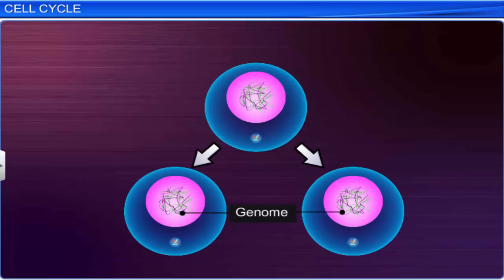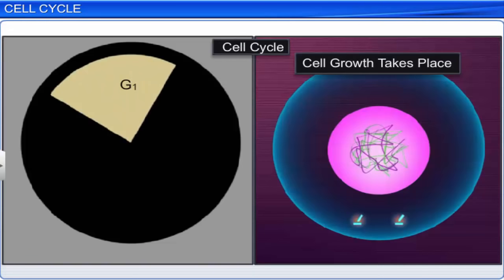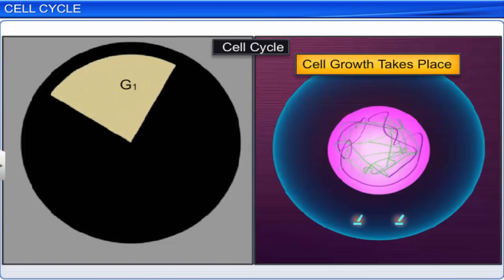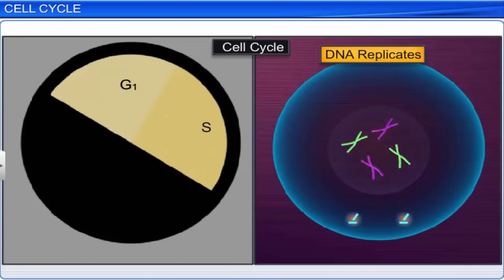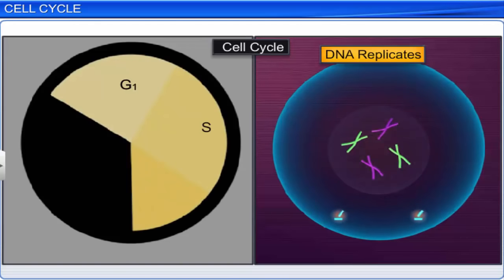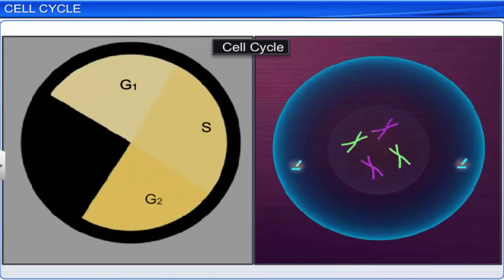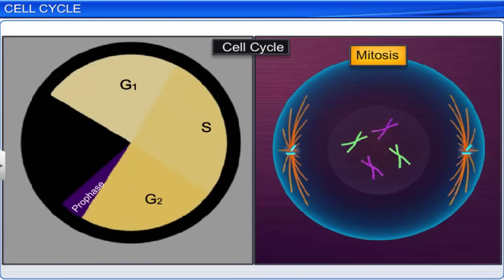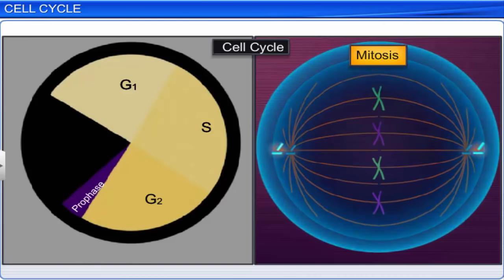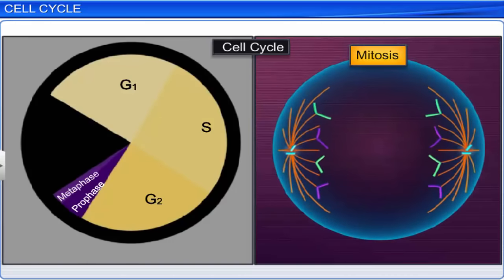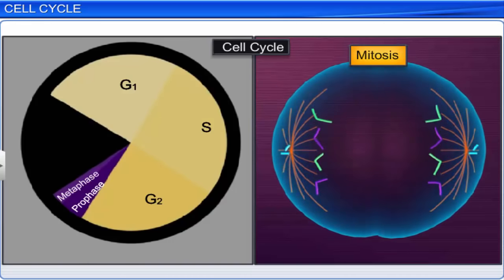The series of events by which a cell duplicates its genome, synthesizes its constituents, and eventually divides to form two daughter cells, is known as the cell cycle.